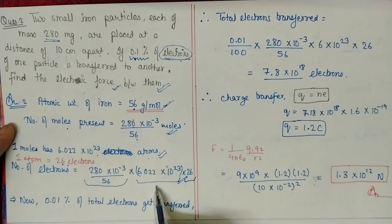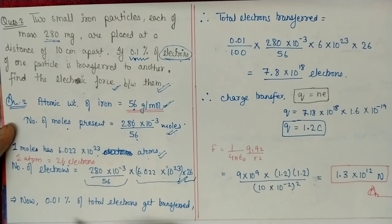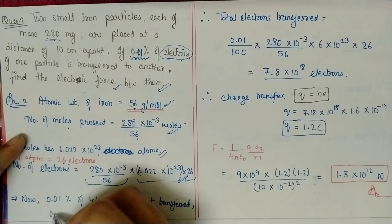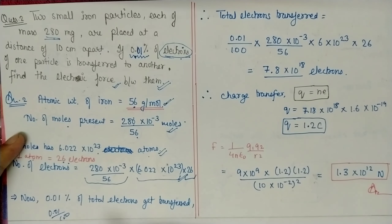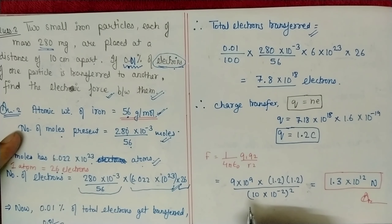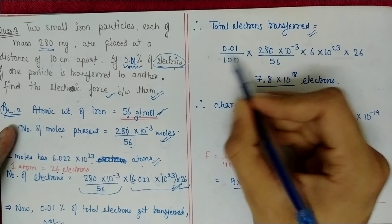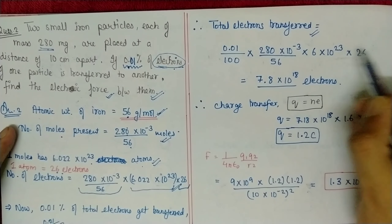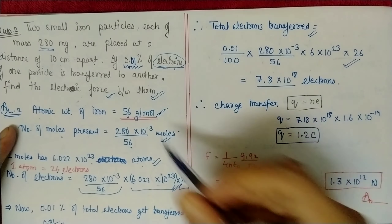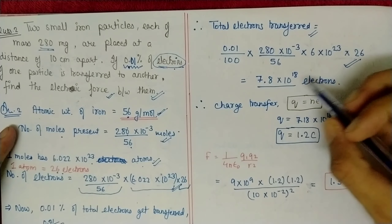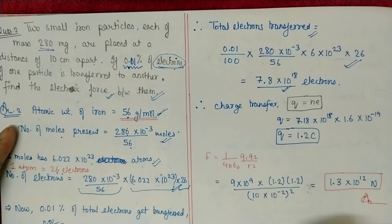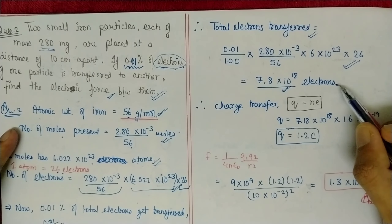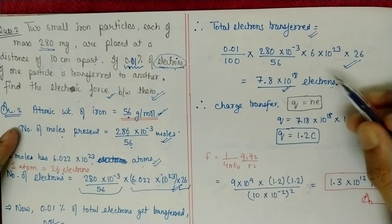Now, 0.01% of the total electrons are transferred (the problem says 0.1% but let's use 0.01%). So multiply the total by 0.01/100. The full equation is: (0.01/100) × (280 × 10⁻³ / 56) × 6 × 10²³ × 26. Solving this gives 7.8 × 10¹⁸ electrons transferred.